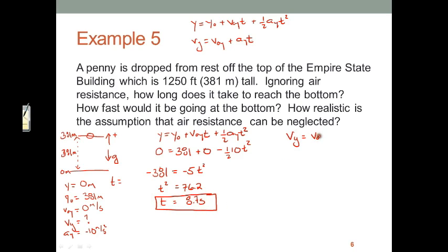I can now use the bottom equation to find the final velocity, assuming air resistance can be neglected. V naught y is 0, A sub y is negative 10, T we just found as 8.7 seconds. So 10 times 8.7 is a whole lot like 87 meters per second. So if we ignore air resistance, that penny would be going 87 meters per second at the bottom.